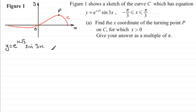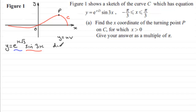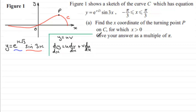In order to differentiate this, we've got the product of two functions of x — e to the power x root 3, and sine of 3x. Because we can't multiply these out, we need to use the product rule for differentiation. If you've got two functions of x multiplied together, say y equals uv, then dy/dx equals u times dv/dx plus v times du/dx. This is the product rule — you can find it in your formula book, but I'd still encourage you to learn it.